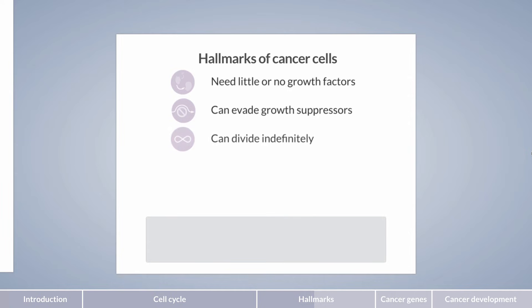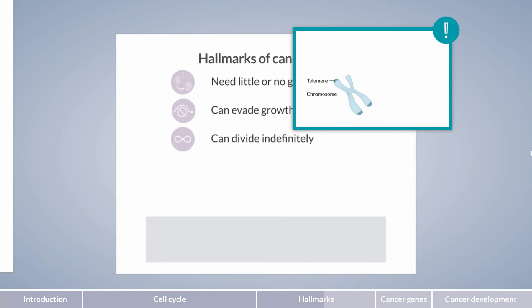Third, cancer cells can divide indefinitely. They have limitless replicative potential. This is in contrast to non-cancerous cells of the body, which are incapable of indefinite division. The mechanism behind this lies in the telomeres, which shorten with each cell division.